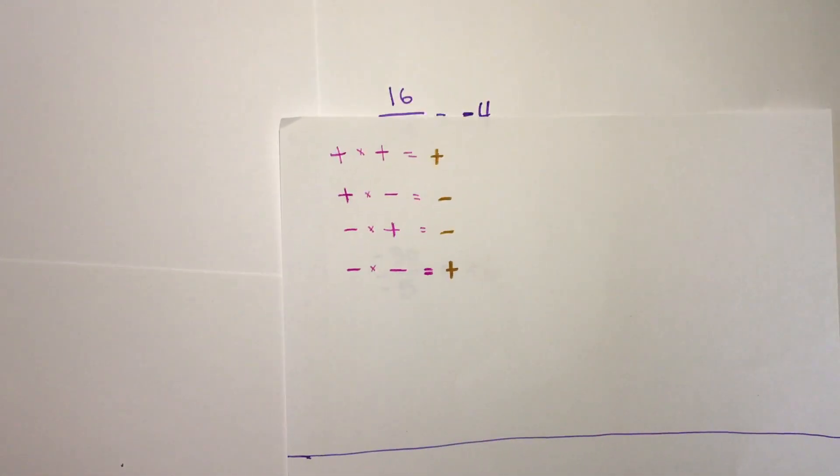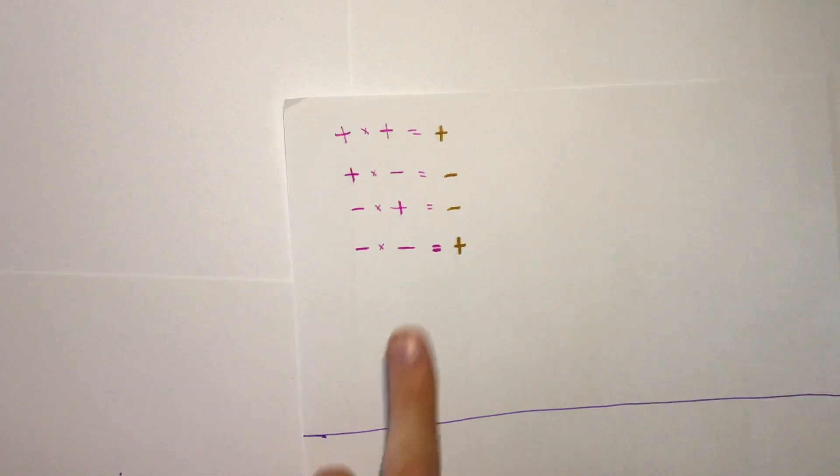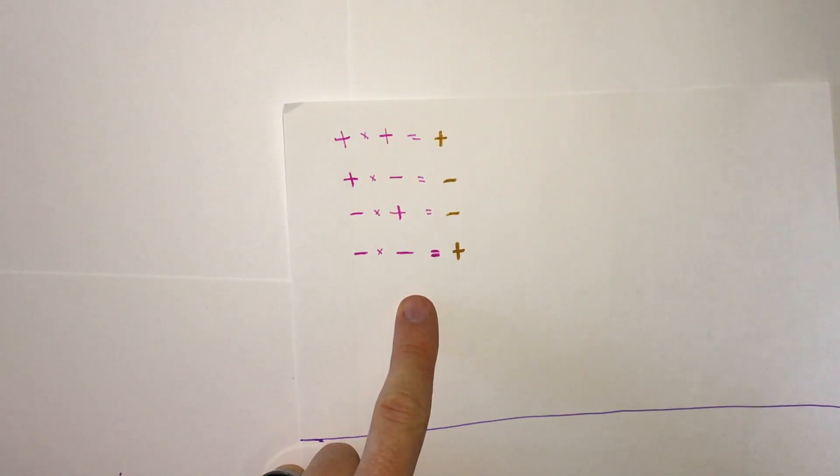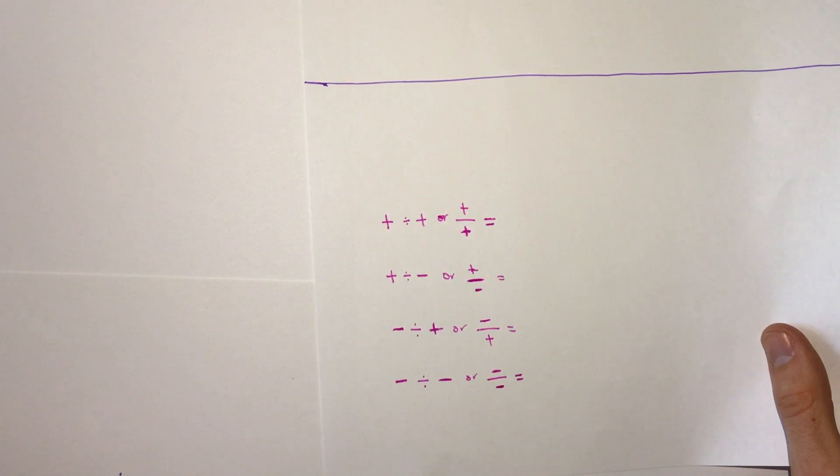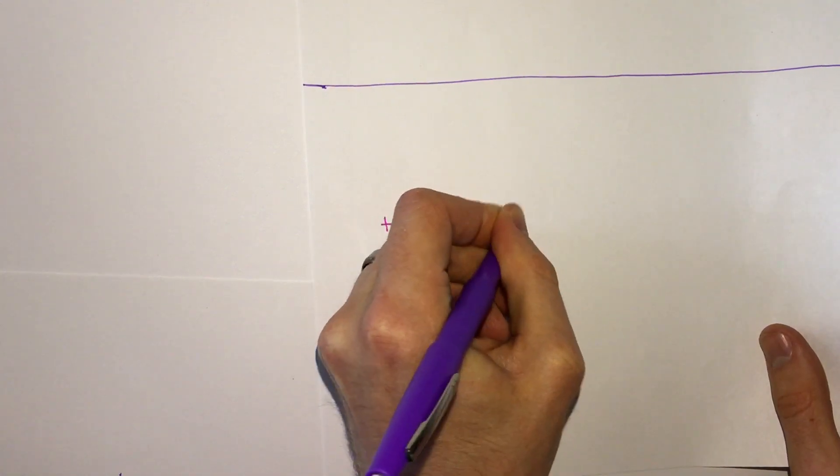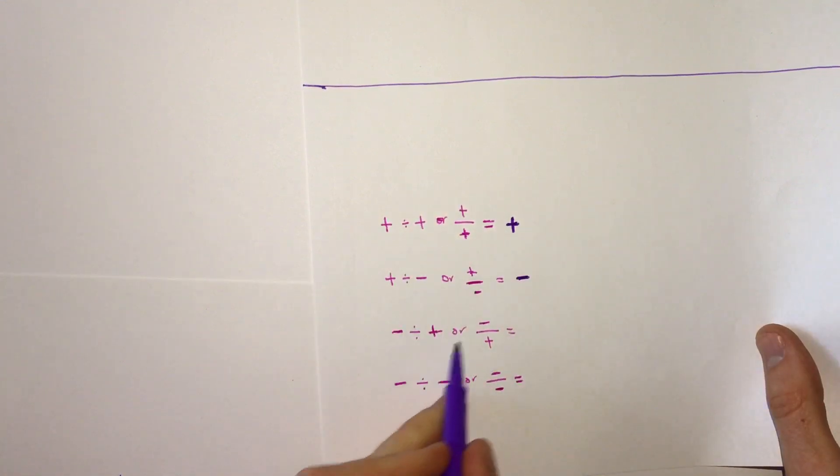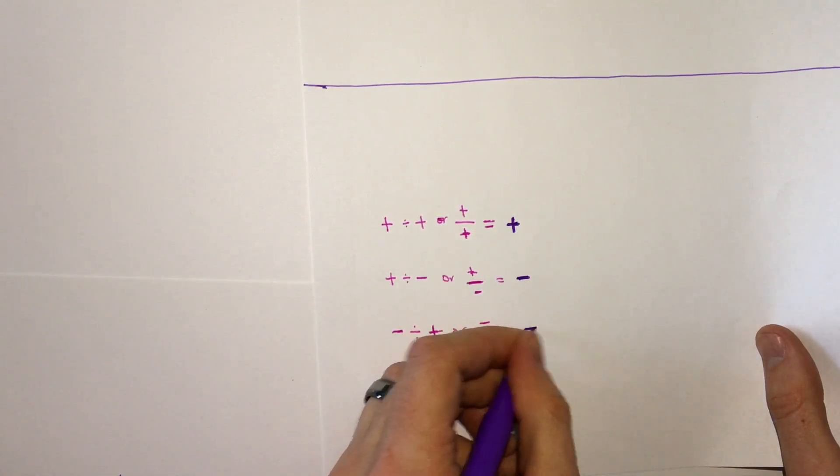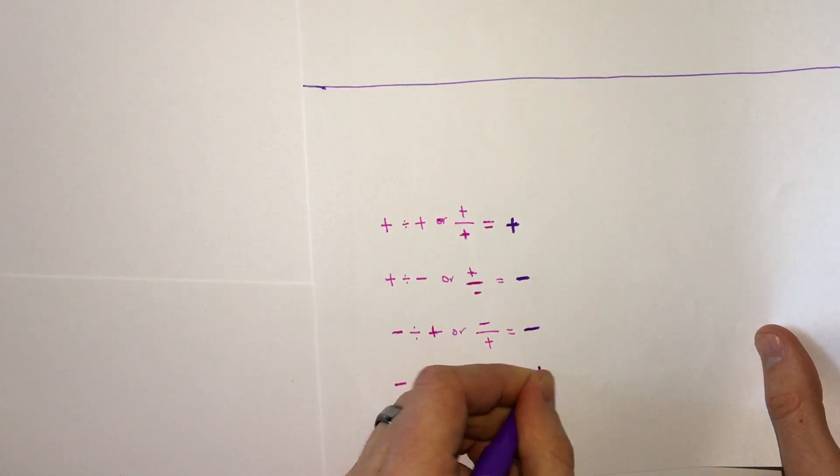So if we summarize that in our table, for multiplication we had this pattern, we have the same pattern with division. Positive divided by a positive, we already know that's positive. Positive divided by a negative is negative. Negative divided by a positive is negative. And if we have two negatives dividing, we have a positive.